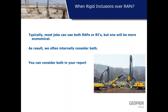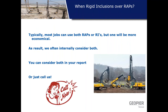For moderate loads and moderately stiff sites, you sometimes have to evaluate projects with both rammed aggregate piers and rigid inclusions, estimate both, price them out, and determine which is the better choice. You can consider both in your report, but it's probably better to call us — we can walk through the various options and give feedback via internal pricing as to what's most economical, so you come to your owner with the best option rather than a basket of options.